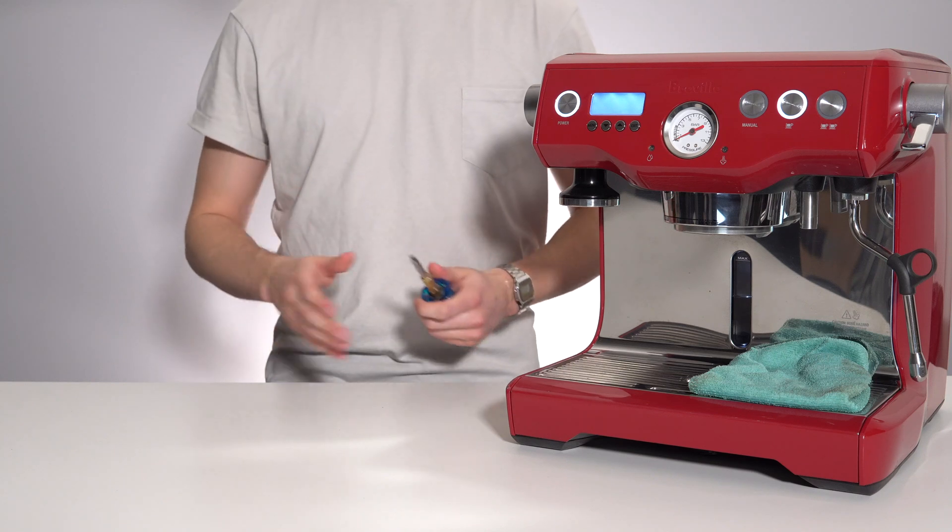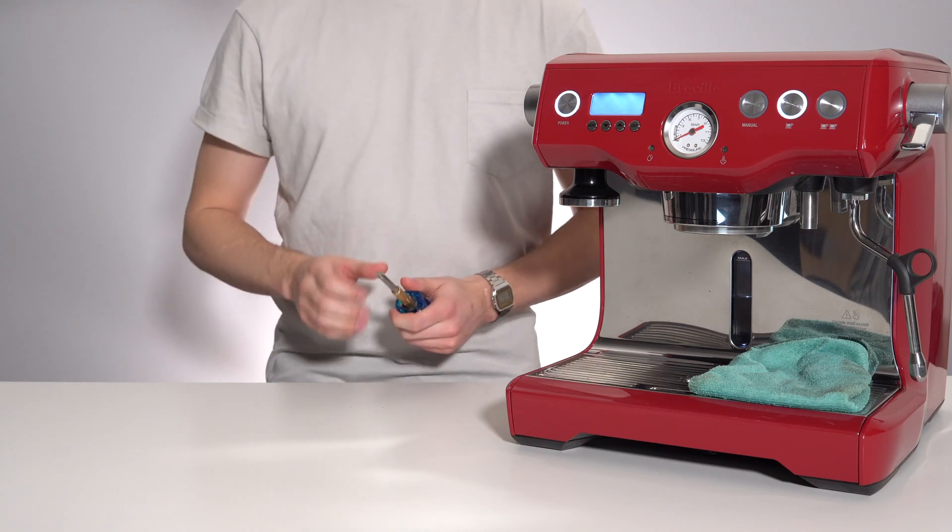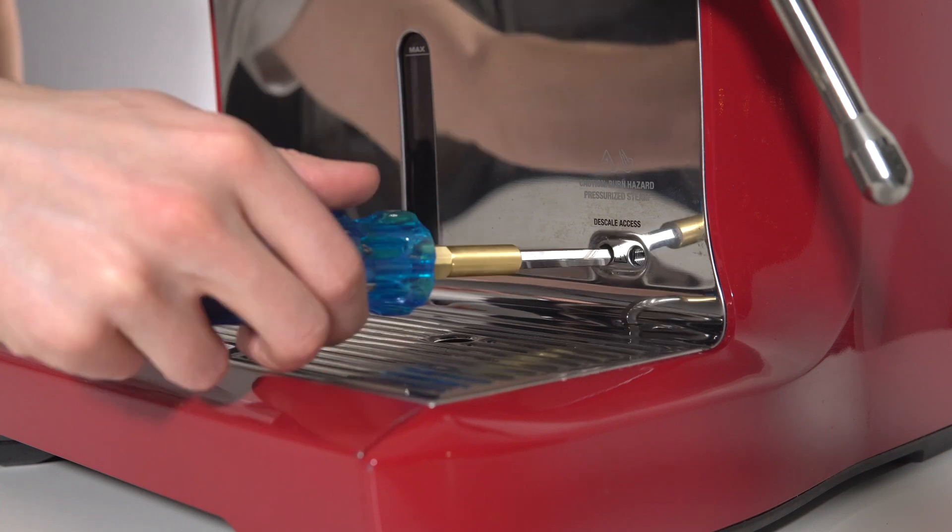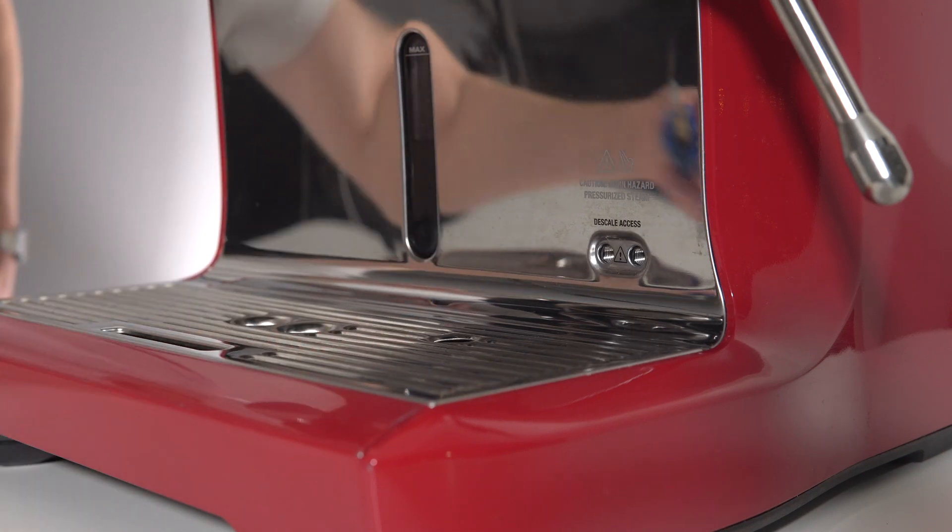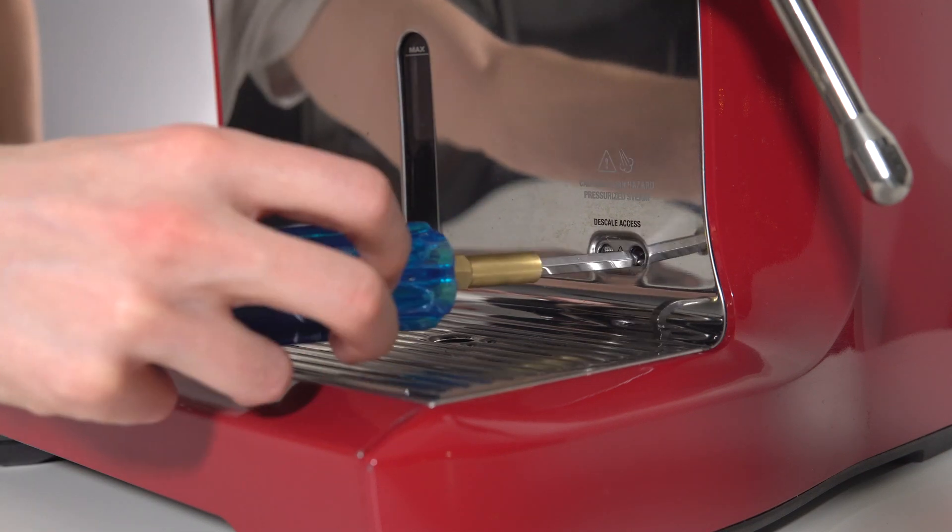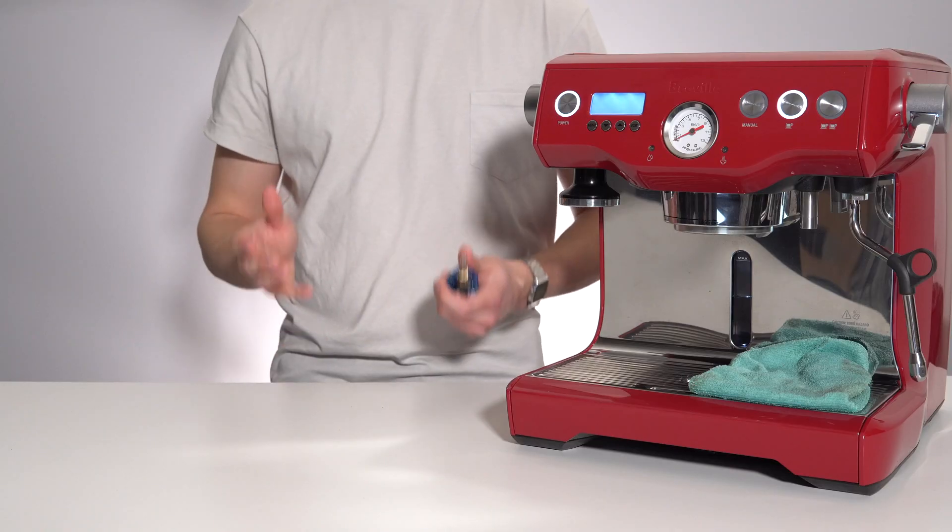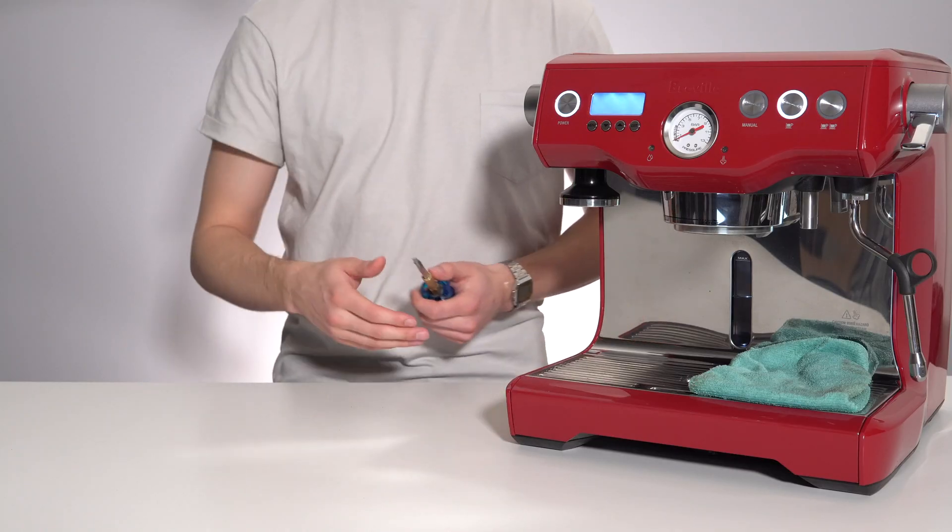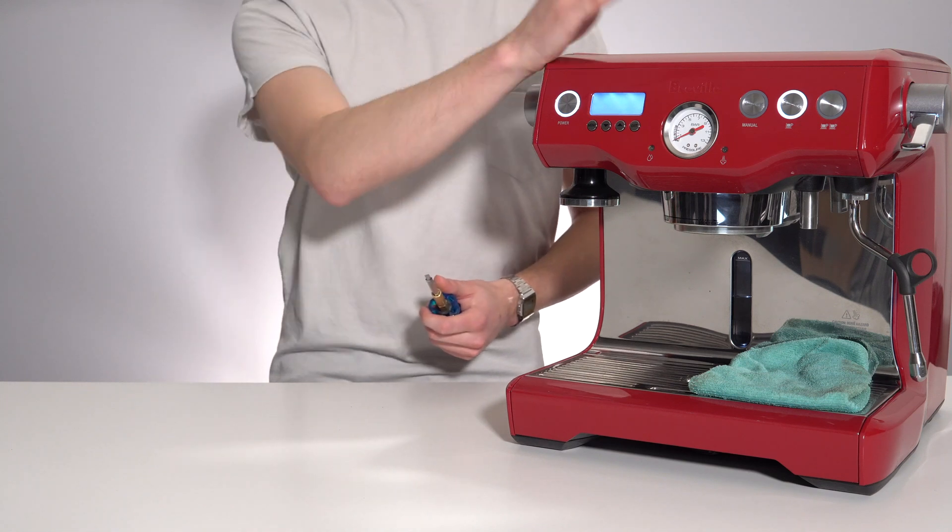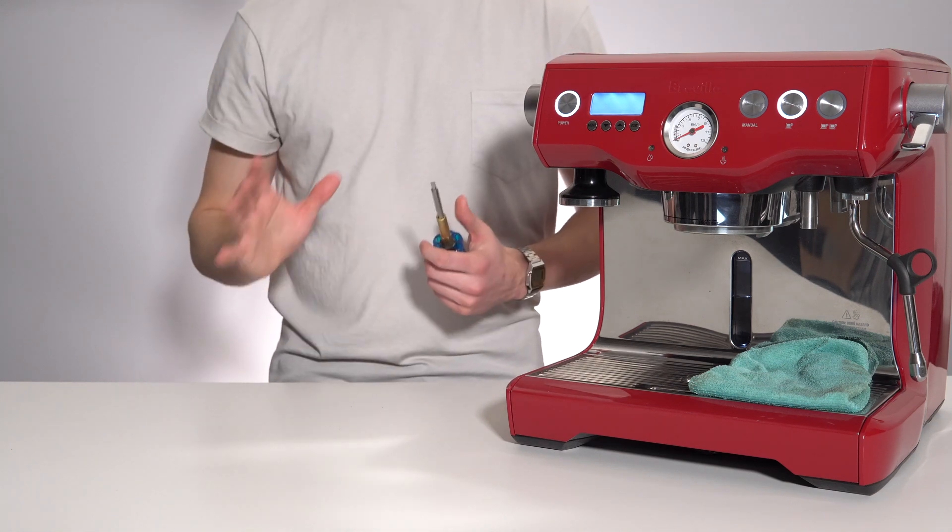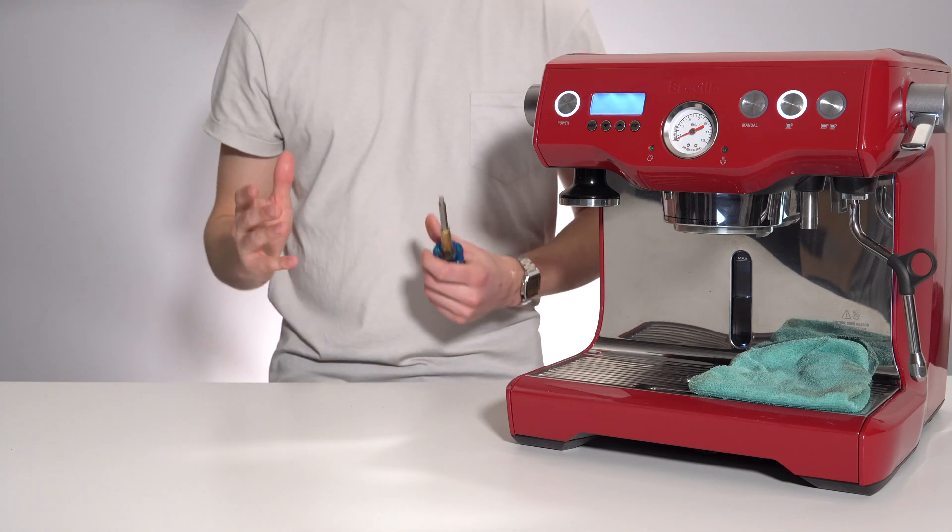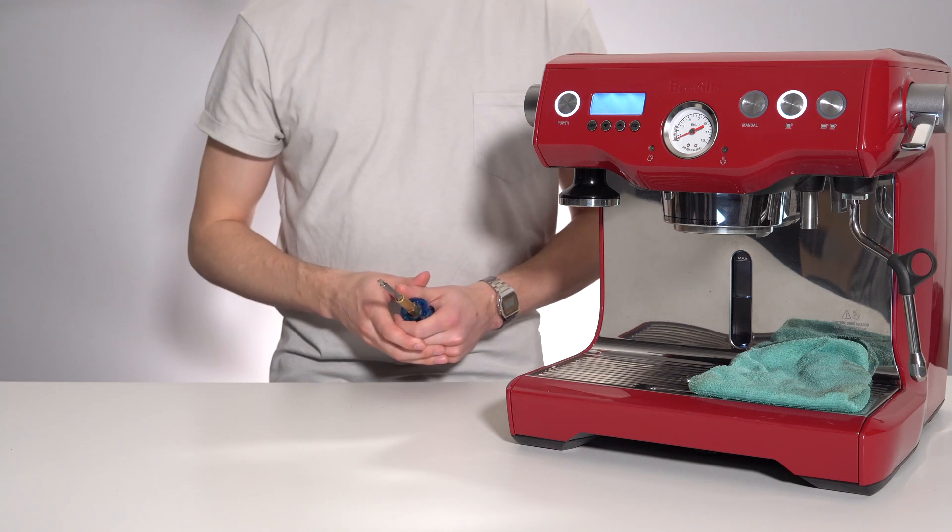Once the 20 minute descaling cycle has completed, you will now need to repeat the process of opening both valves, waiting for the water to run out, and then closing them back down. Once you have completed this process, empty out your drip tray. You will then once again press the illuminated button which will start a 5 minute cycle to rinse out any last remnants of descaling solution from your machine.